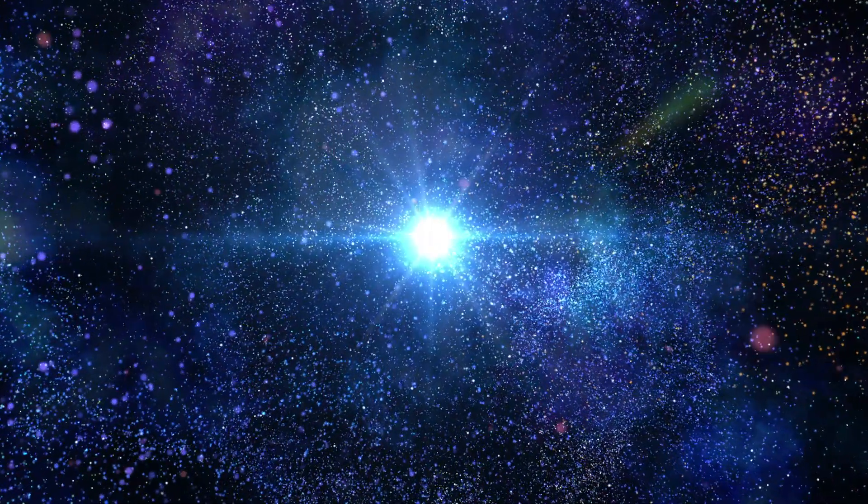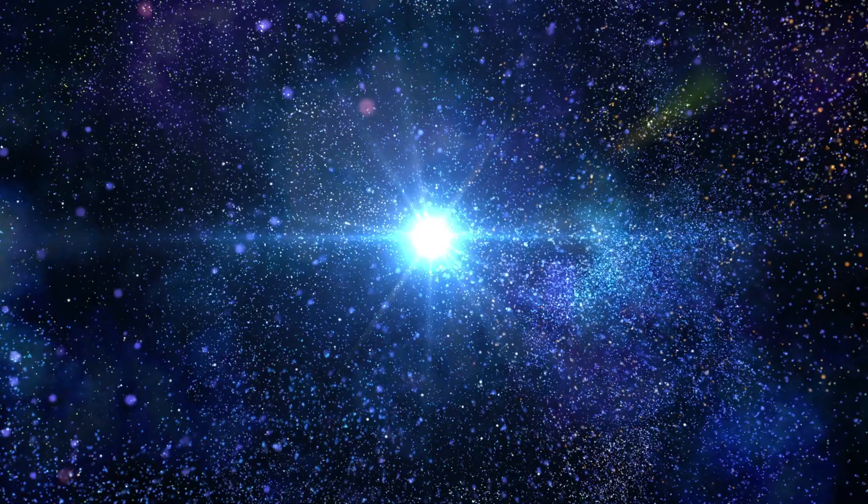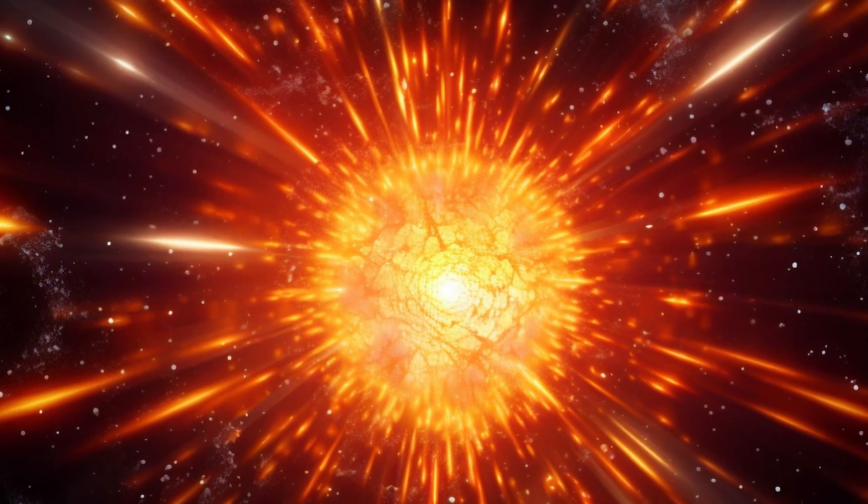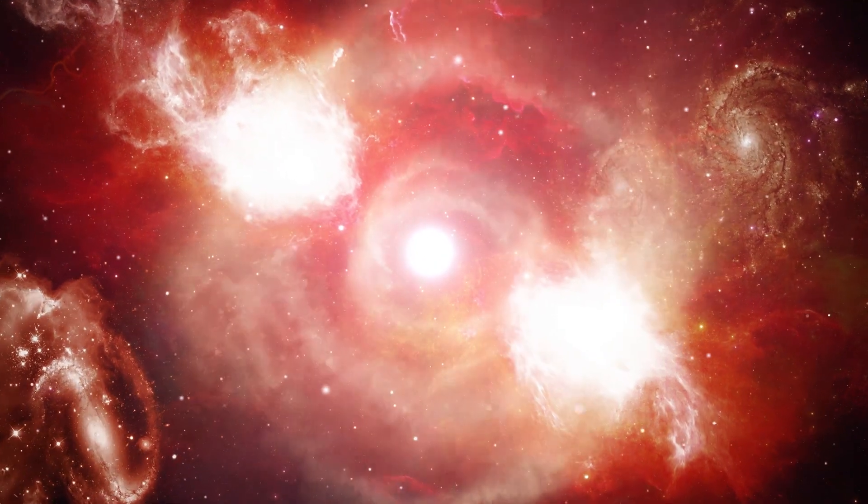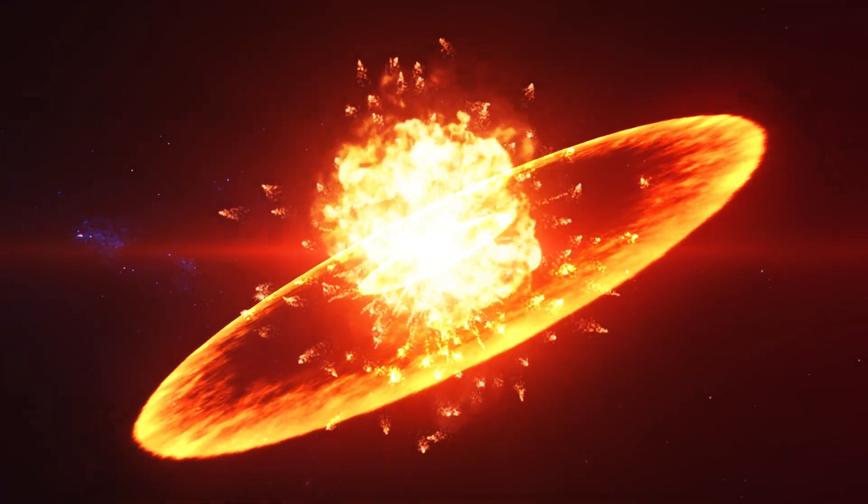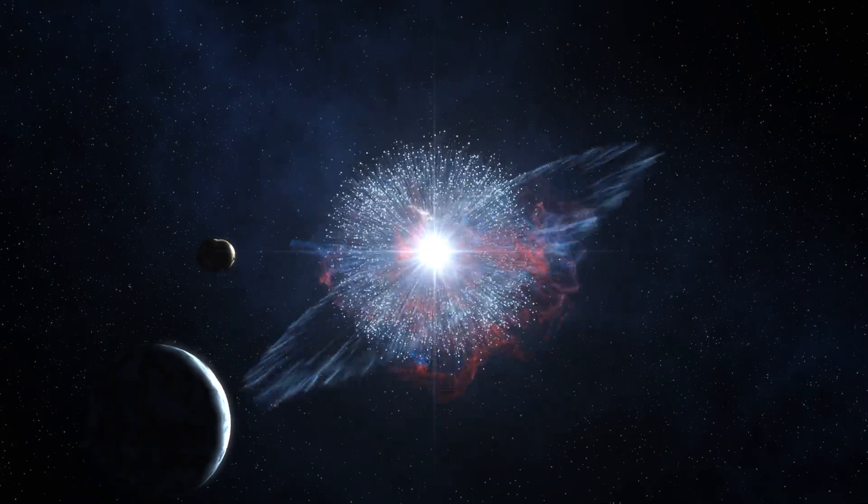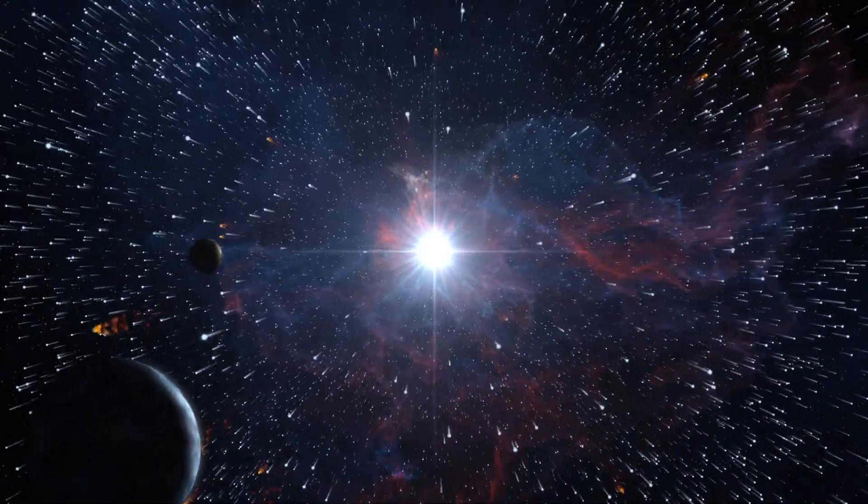When a star exhausts its nuclear fuel, it can no longer support its weight. The core collapses under the immense gravitational force, leading to a catastrophic explosion that can outshine entire galaxies for weeks or even months. This stellar death throes release incredible energy, propelling the star's outer layers into space at millions of kilometers per hour.